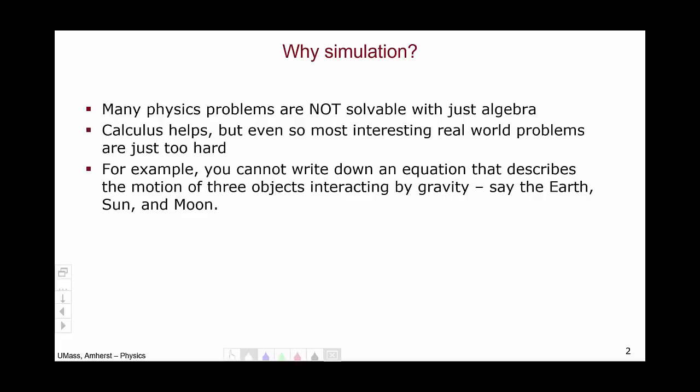For example, just to make an extreme example, think about the Earth, the Sun, and the Moon. Three objects described by a force law from the 17th century that says the force of gravity between two masses, say the Earth and the Moon, is their masses and the distance between them squared. That's it.